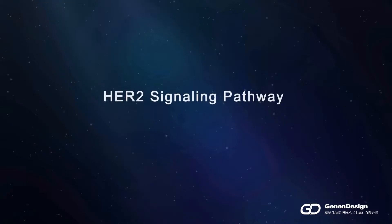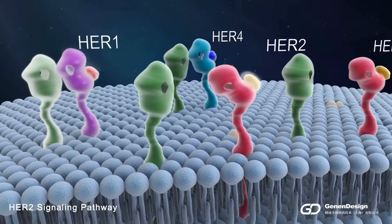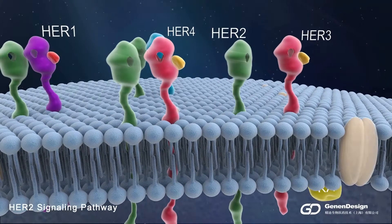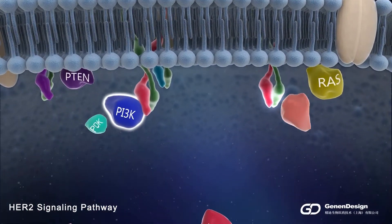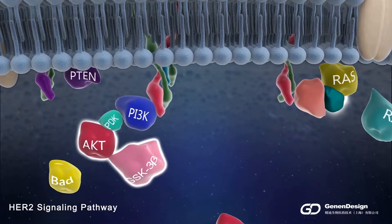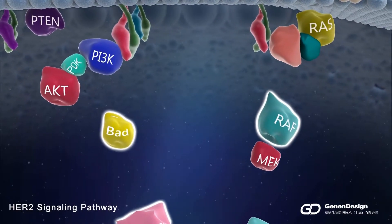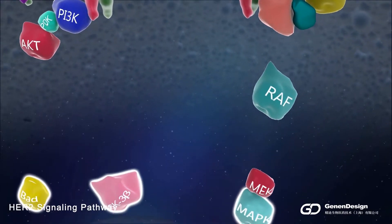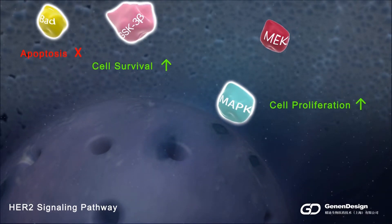The role of HER2 signaling pathway in cancer has been well studied. The HER receptor tyrosine kinase family consists of four members: HER1, HER2, HER3, and HER4. HER2 signaling is started with ligand binding, receptor heterodimerization, followed by activation through downstream signaling cascades, including the MAPK proliferation pathway and the PI3K-AKT pro-survival pathway, to regulate cell proliferation, survival, and apoptosis.